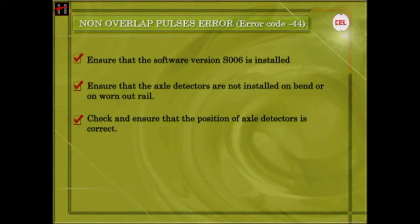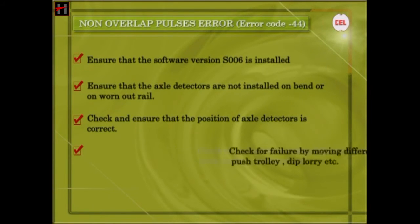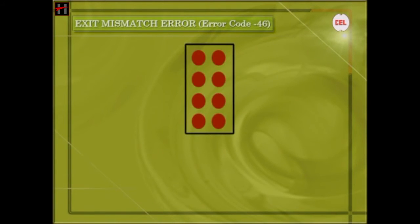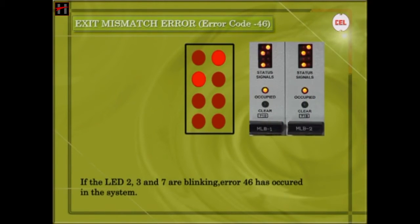Check and ensure that the position of the axle detectors is correct. Check for failure by moving different types of trolleys — motor trolley, perforated push trolley, dip lorry, etc. Exit Mismatch Error: If LEDs 2, 3, and 7 are blinking, then Error 46 has occurred in the system.